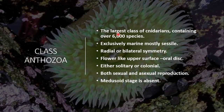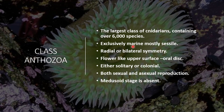Class Anthozoa is the largest class of Phylum Cnidaria, containing more than 6000 species. Class Anthozoa includes more corals, which is why they have more species. They are marine and mostly sessile forms.